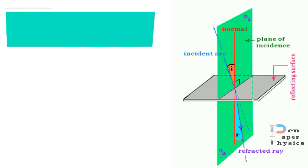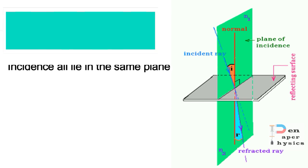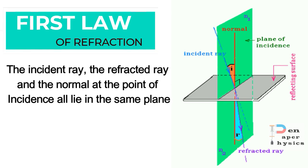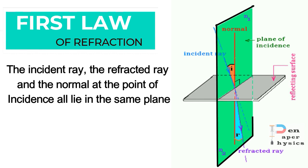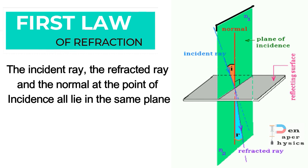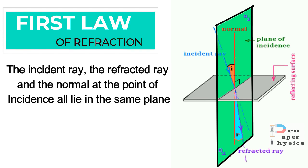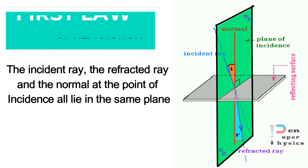The first law of refraction states that the incident ray, the refracted ray, and the normal drawn at the point of incidence all lie in the same plane. As you can see, the incident ray, refracted ray, and the normal are all lying in the same plane, which is colored green. This plane is also called the plane of incidence or plane of refraction, as both refer to the same plane.